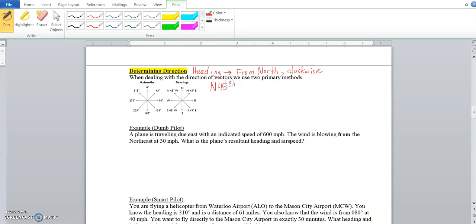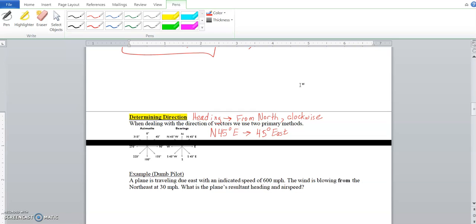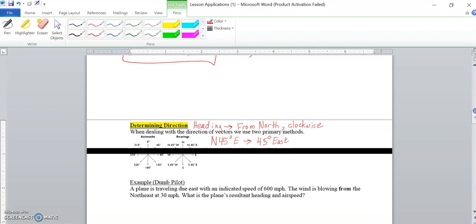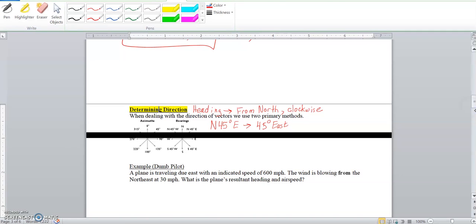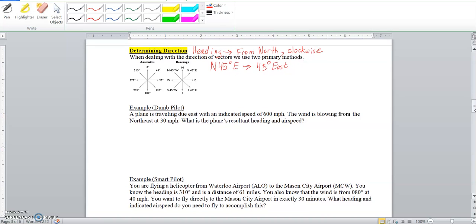If I were to have seen or been given N 45 degrees E, you might see exactly that in a problem and that just is read off kind of right to left. What it's saying is that you are pointing 45 degrees east of north.